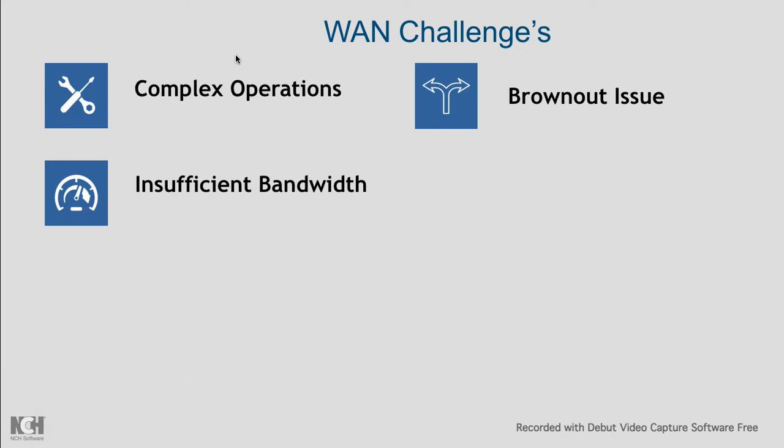Most WAN or branch designs are active-backup, meaning the backup link is always on a stale connection — you pay for it without leveraging its bandwidth. Even in active-active designs with policy-based routing, traffic is steered purely on destination-based prefix without knowing actual link bandwidth, so it becomes load balancing rather than true load sharing, with no granular insight into whether a link can actually support an application.